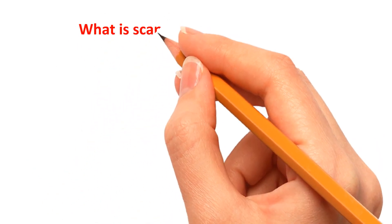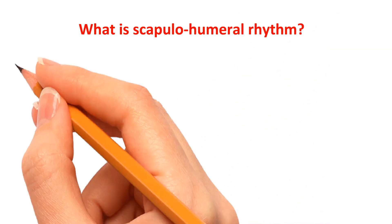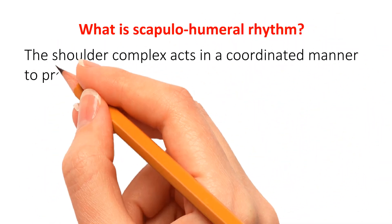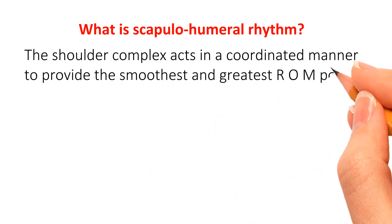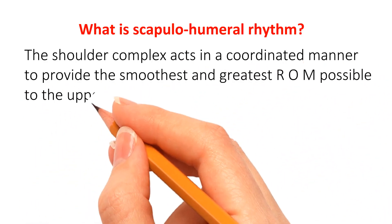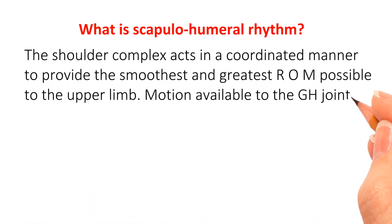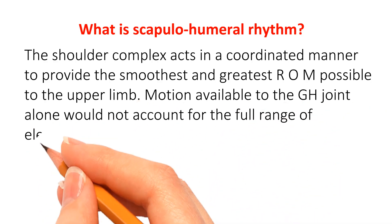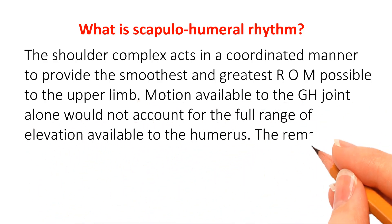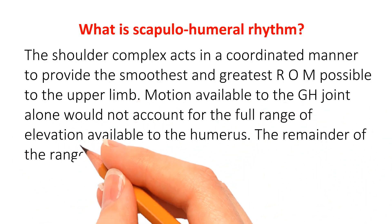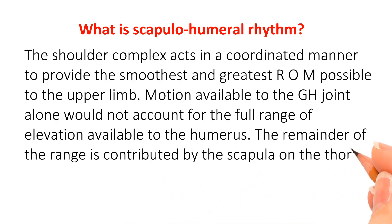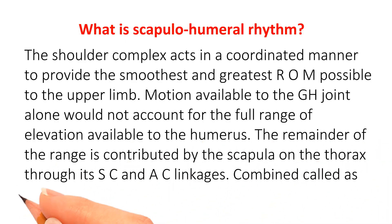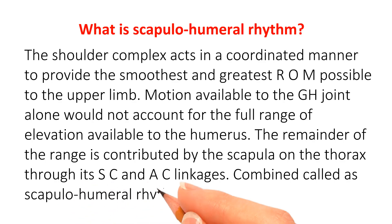Let's start. What is scapulohumeral rhythm? The shoulder complex acts in a coordinated manner to provide the smoothest and greatest ROM possible to the upper limb. Motion available to the GH joint alone would not account for the full range of elevation available to the humerus. The remainder of the range is contributed by the scapula on the thorax through its SC and AC linkages — combined, this is called scapulohumeral rhythm.